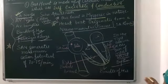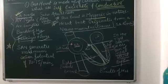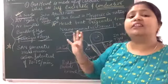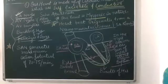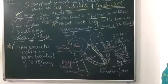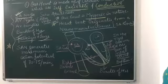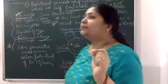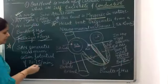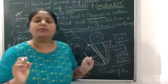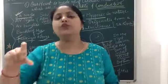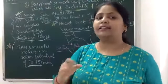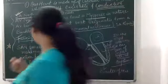The SA node is also responsible for initiating and maintaining the rhythmic contraction of the heart, and therefore it is called the pacemaker. Because of that, our heart beats 70 to 75 times per minute. The average is 72 per minute, but it ranges between 70 to 75 per minute depending upon the action potential.